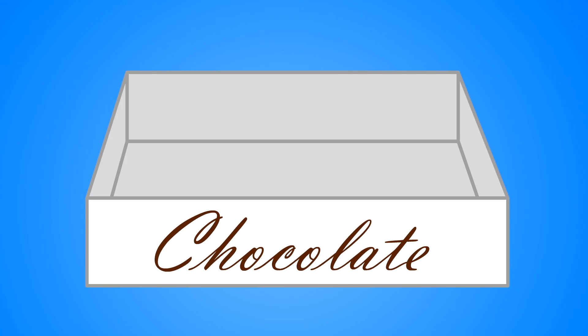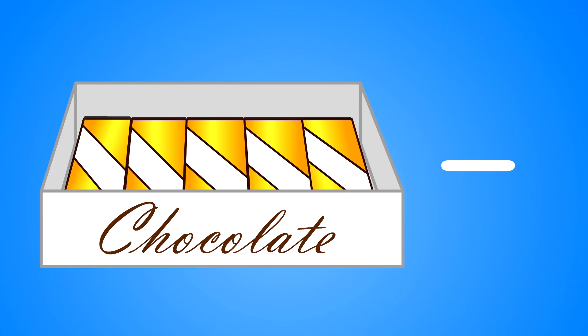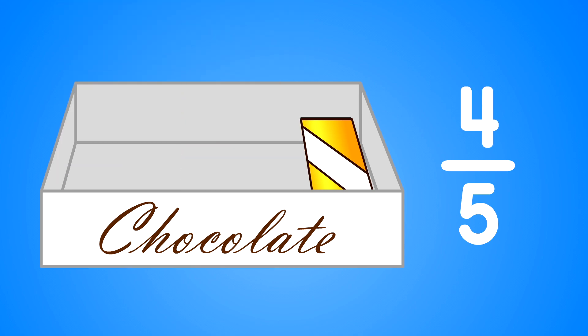Suppose you had a package of candy bars that had five candy bars in it. Then the number in the set, or the denominator, would be five. And the numerator would depend on how many of the candy bars you are talking about. So if my sister came and took four out of the package, then we could say that she took four-fifths of the candy bars. That's right. And how much of the package do you have left? Well, there's one left in here, so I have one-fifth of the candy bars left.